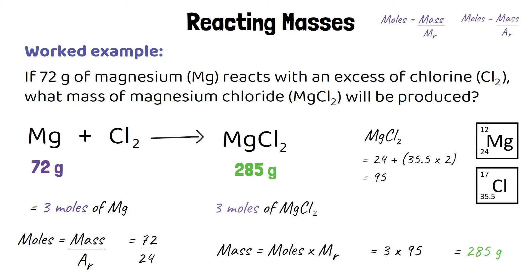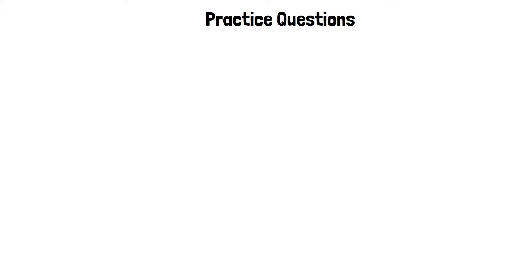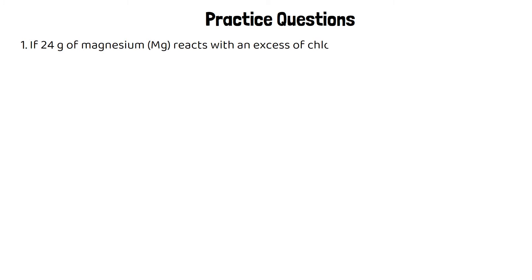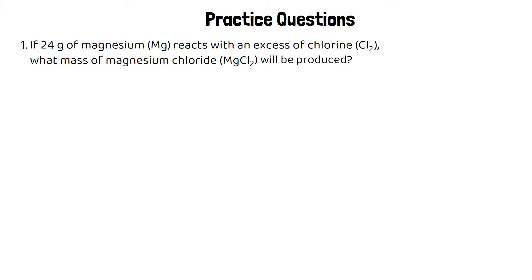For all of these questions we take the same approach: work out the number of moles, work out the number of moles of the other substance, then convert that back into a mass. Here's a practice question: if 24 grams of magnesium reacts with an excess of chlorine, what mass of magnesium chloride will be produced? Here's the balanced symbol equation for that reaction. We're starting with 24 grams of magnesium and trying to work out how many grams of magnesium chloride we can make.